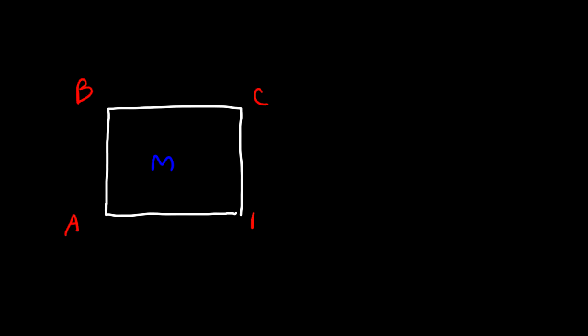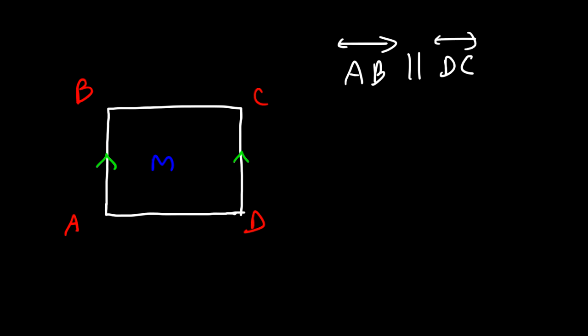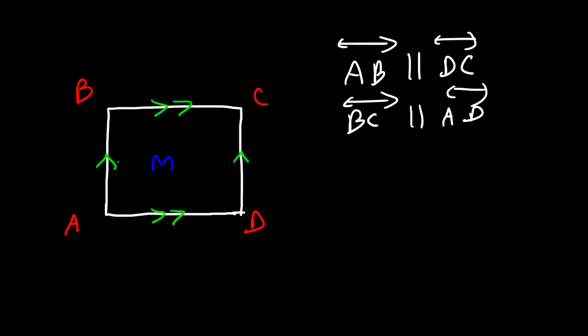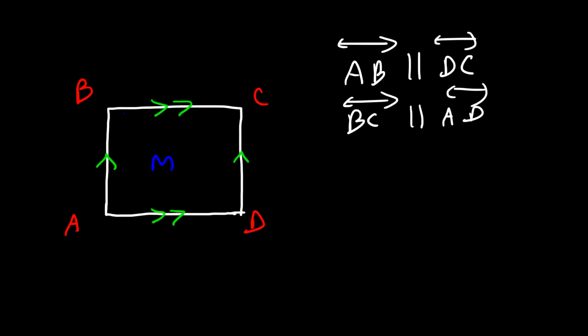Let's say we have a flat plane — call this plane M — with points A, B, C, and D. Which lines are parallel to each other? We could say that AB is parallel to CD: line AB is parallel to line DC. We can also say that BC is parallel to AD. BC and AD are coplanar lines — they both exist in plane M, and AB and DC also exist in the same plane.